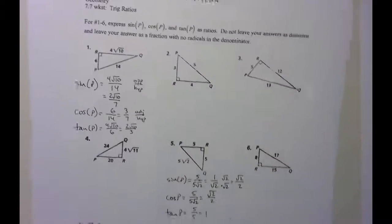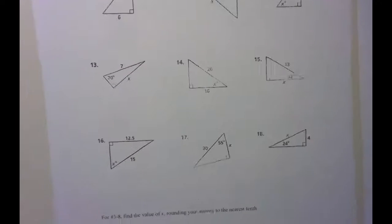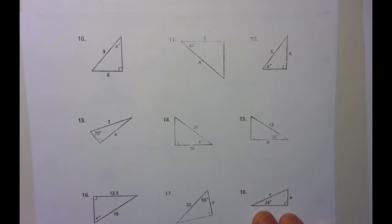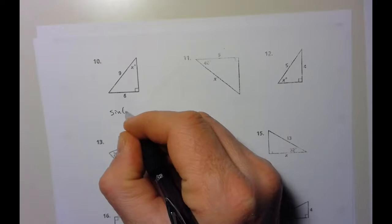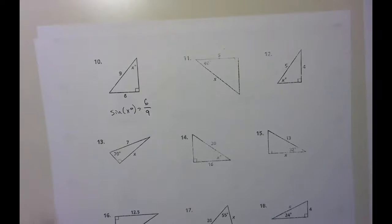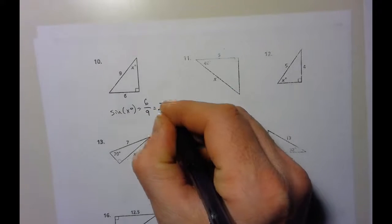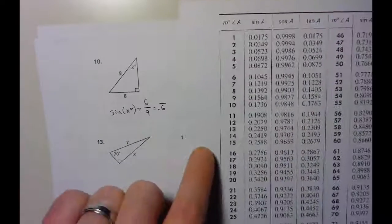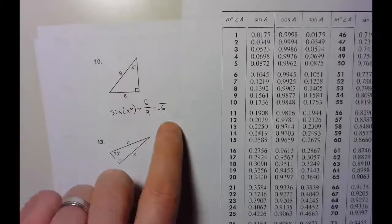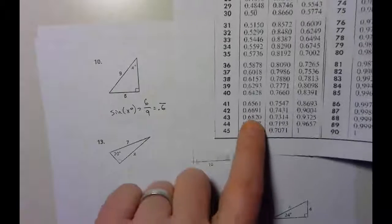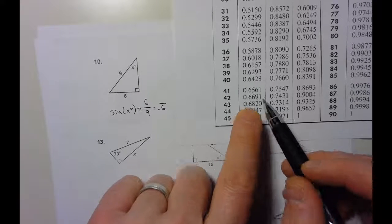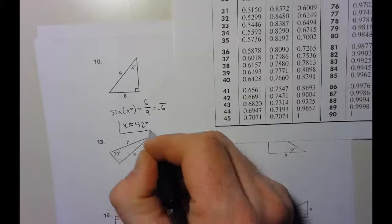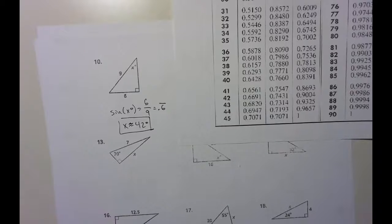Looking at the next page, there are a lot of repeat-style problems. Let me do another angle one since those are a bit harder. For number 10: given is the opposite (6) and hypotenuse (9), so I use the sine ratio — 6 divided by 9 is 0.6̄ repeating. On my trig table in the sine column, 0.6̄ is between 0.656 and 0.669, but it's much closer to 42°, so the answer is about 42°.